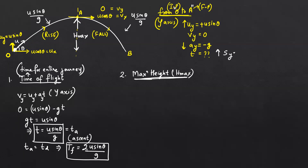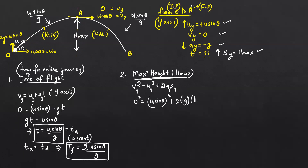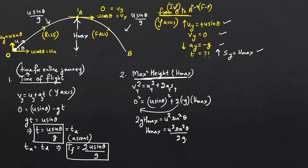Using v² = u² + 2as along the y-axis: v_y² = u_y² + 2a_y·s_y gives 0 = (u sinθ)² + 2(−g)(h_max), so 2g·h_max = u² sin²θ, therefore h_max = u² sin²θ / 2g. This is the expression for maximum height.